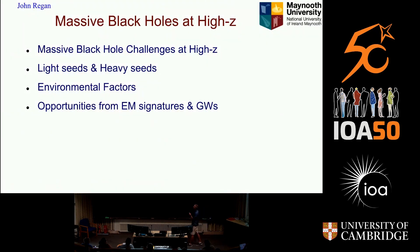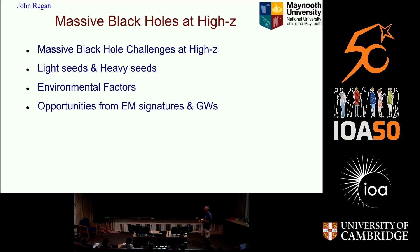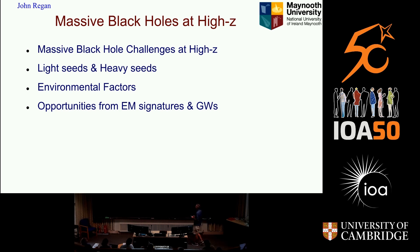I'll talk about the challenges we have at high redshift. Generally speaking, in the field, black holes are broken down into light seeds and heavy seeds. Light seeds you can think of as somewhere between zero and a thousand solar masses; heavy seeds are heavier than that. I'll talk about the environmental factors at play for both, and also some opportunities from electromagnetic signatures and gravitational waves that might help us disentangle what the seeds are.